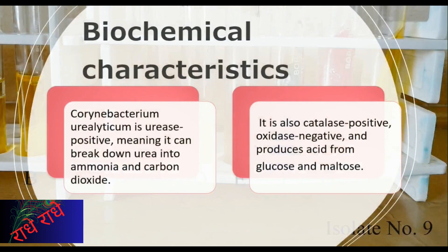Coronybacterium ureoliticum is capable of breaking down urea, a component of urine, into ammonia and carbon dioxide. This process is due to its urease-positive property. Additionally, the bacterium is catalase-positive, meaning it produces an enzyme called catalase that can break down hydrogen peroxide into water and oxygen. However, it is oxidase-negative, meaning it does not produce an enzyme called oxidase that is involved in electron transport. Lastly, the bacterium is able to produce acid from glucose and maltose, which can be useful in identifying it in laboratory settings.